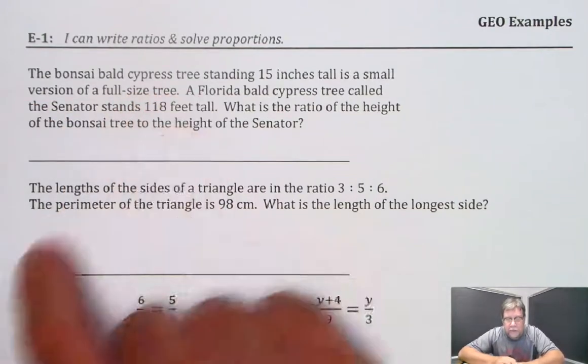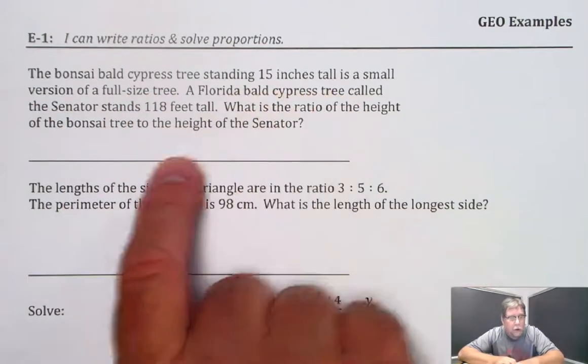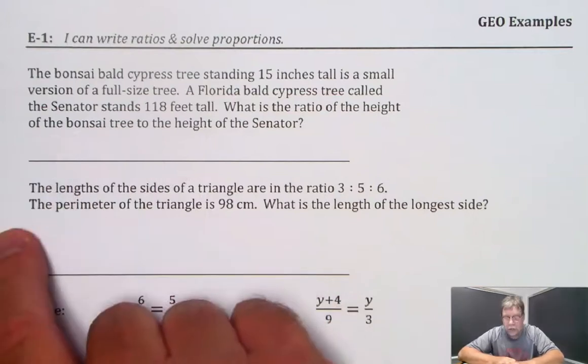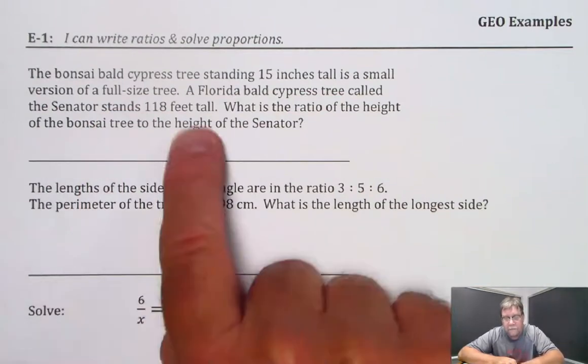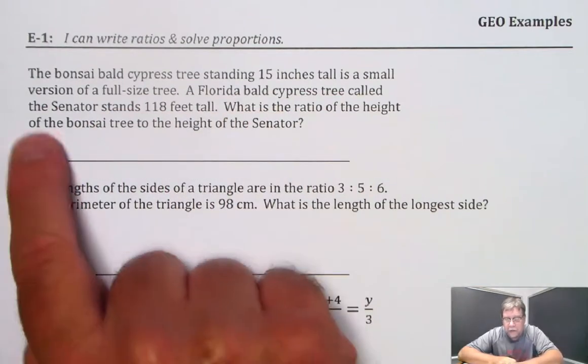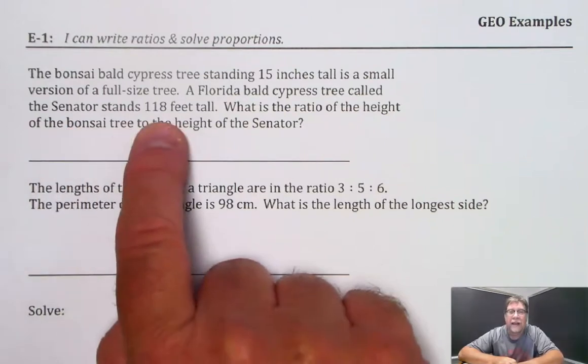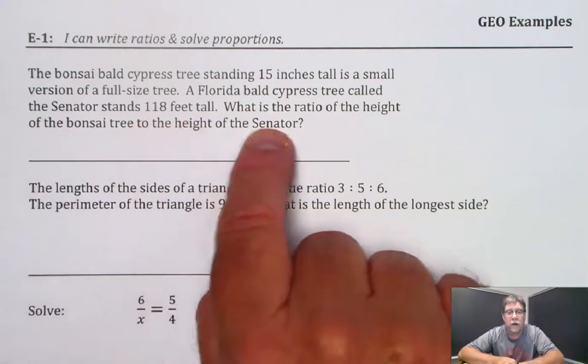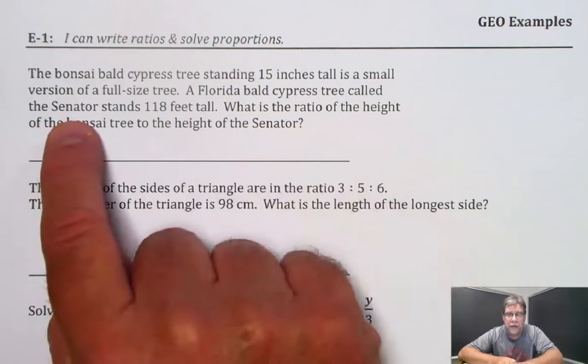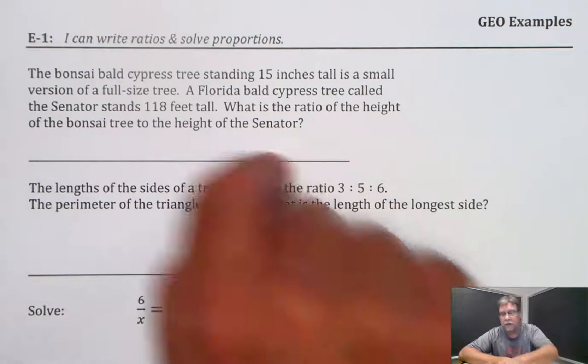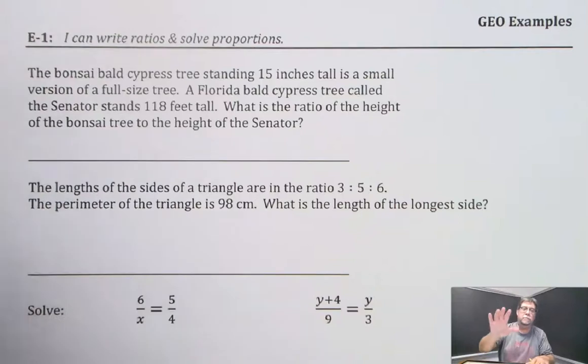The bonsai bald cypress tree standing 15 inches tall is a small version of a full-size tree. A Florida bald cypress tree called the senator stands 118 feet tall. What's the ratio of the height of the bonsai tree to the height of the senator? So we want to compare the smaller tree to the larger tree.